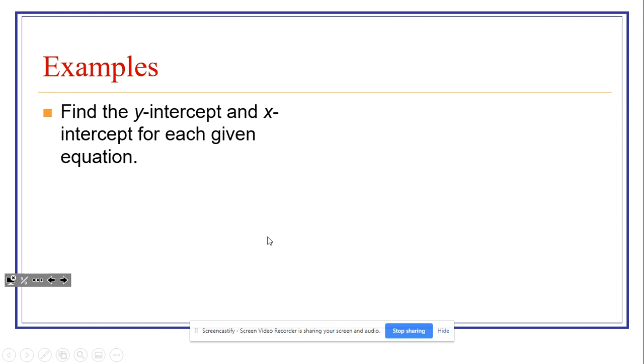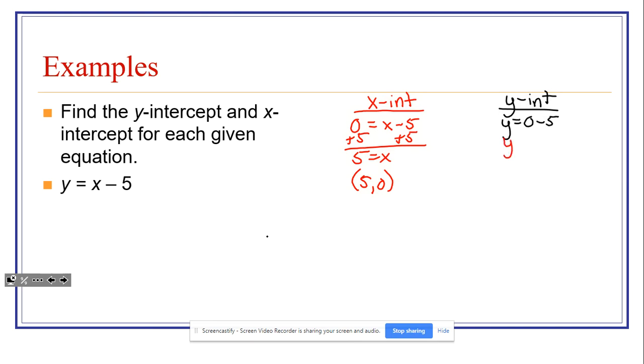Here's some examples. We're going to find the Y-intercept and X-intercept for each given equation. Let's start with Y equals X minus 5. So the first thing I'll do for an X-intercept is I want to plug zero in for Y. So zero equals X minus 5. And now I'm going to solve for X. So I'm going to add 5 to both sides. And 5 is equal to X. Now the X-intercept, we have to write as a point. So the coordinates of that point are 5, 0, because zero is always what the Y-coordinate will be for any X-intercept. For the Y-intercept, I want to plug zero in for X and solve for Y. So Y is equal to zero minus 5. Zero minus 5 is equal to negative 5. And so as a point, it is 0, negative 5.